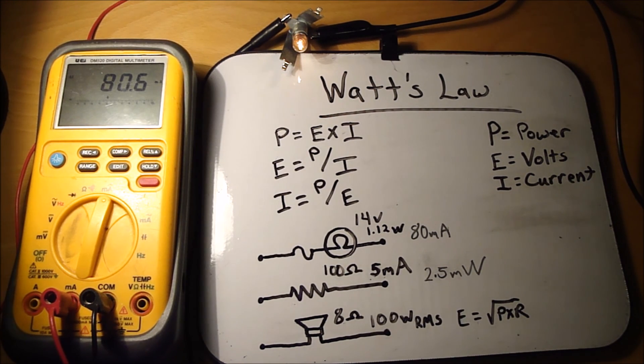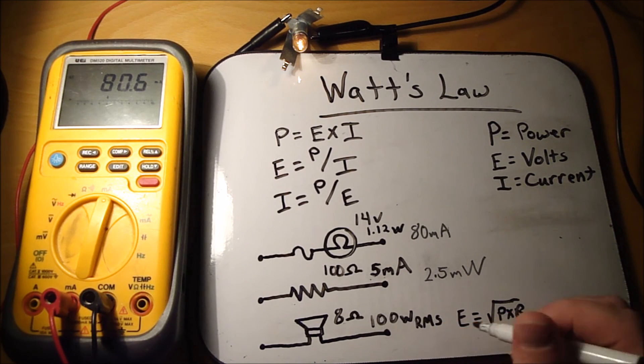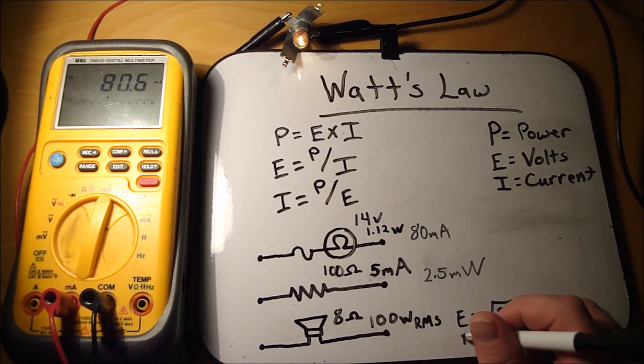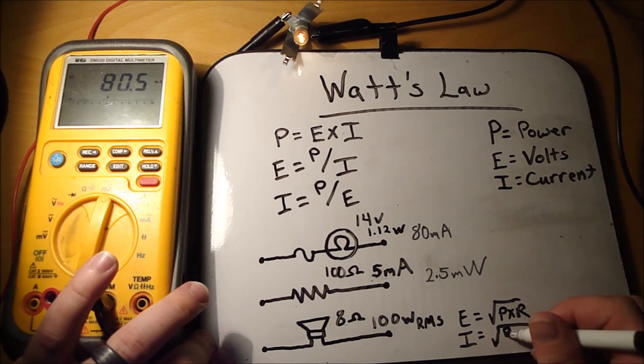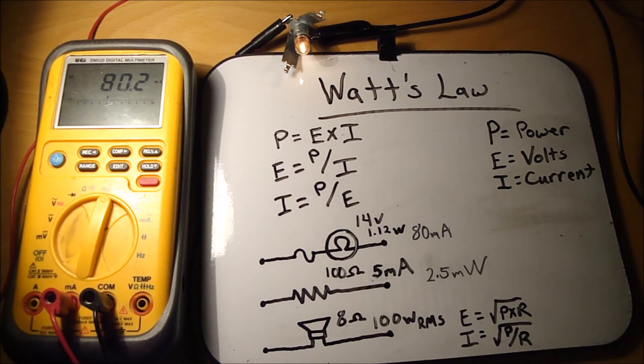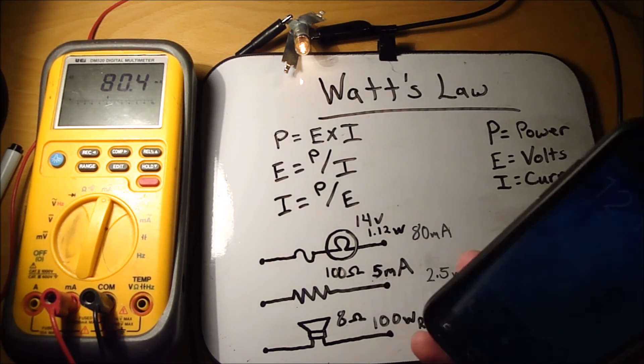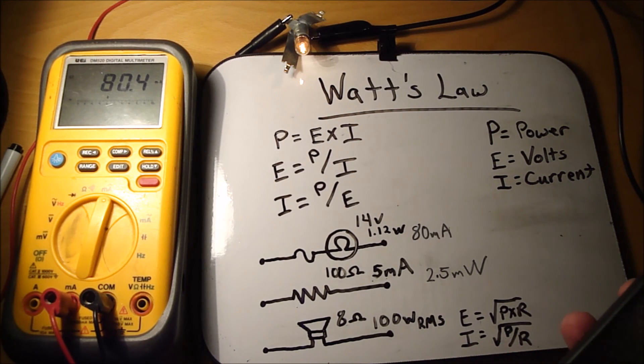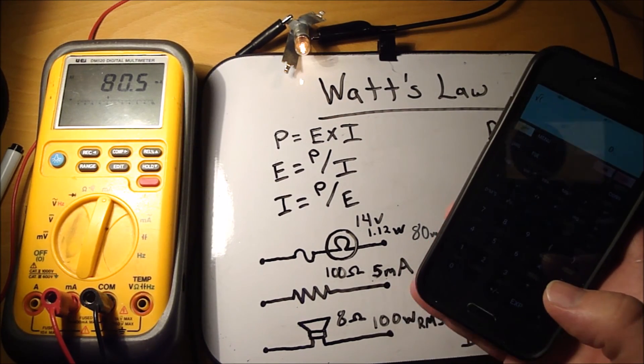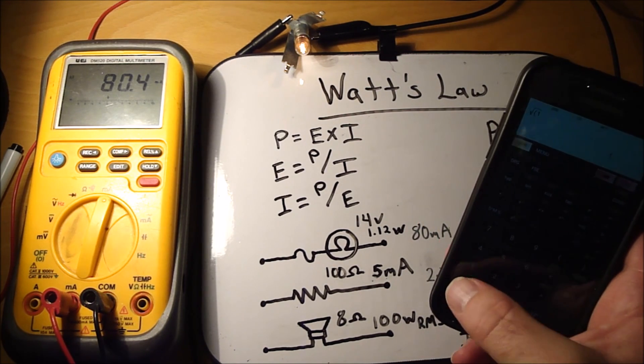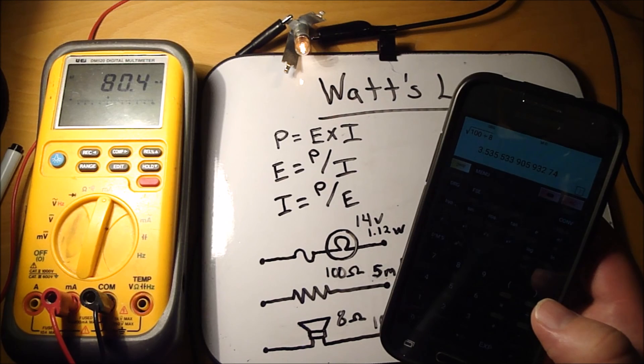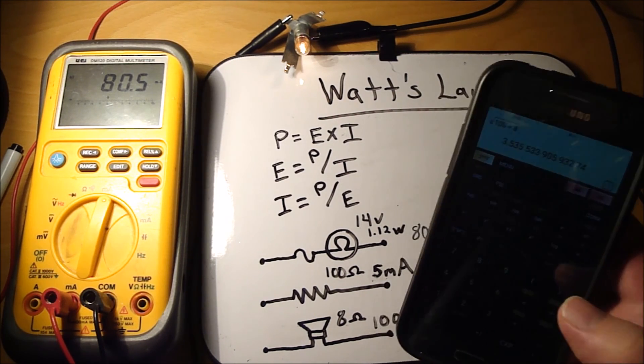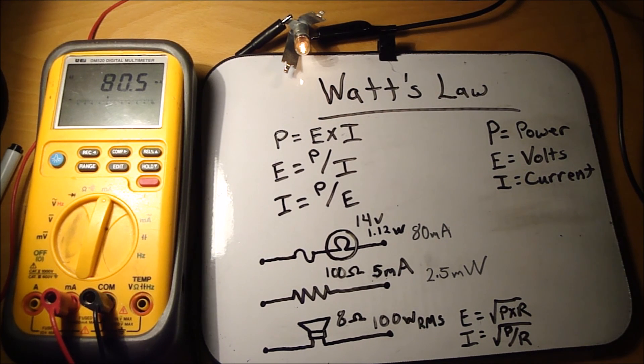If you want to know the maximum current that that speaker can handle. The equation for that is I equals the square root of P divided by R. So the maximum current that that speaker can draw at 100 watts is square root of P divided by R. So it would be 100 divided by 8. So it would be a maximum of 3.5 amps going through that speaker when it's running at its maximum watts RMS.